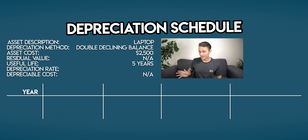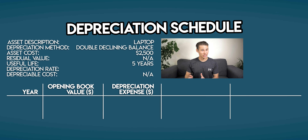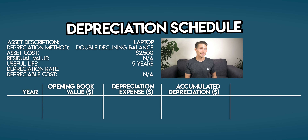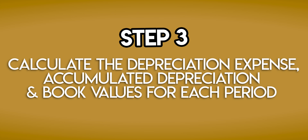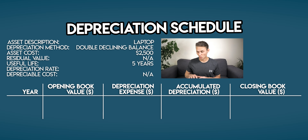We have: year, opening book value, depreciation expense, accumulated depreciation, and closing book value. Step 3: calculate the depreciation expense, accumulated depreciation and book values for each period. This is where we get to fill in all of the blanks, and we'll start with year 1 — this is the first accounting period.